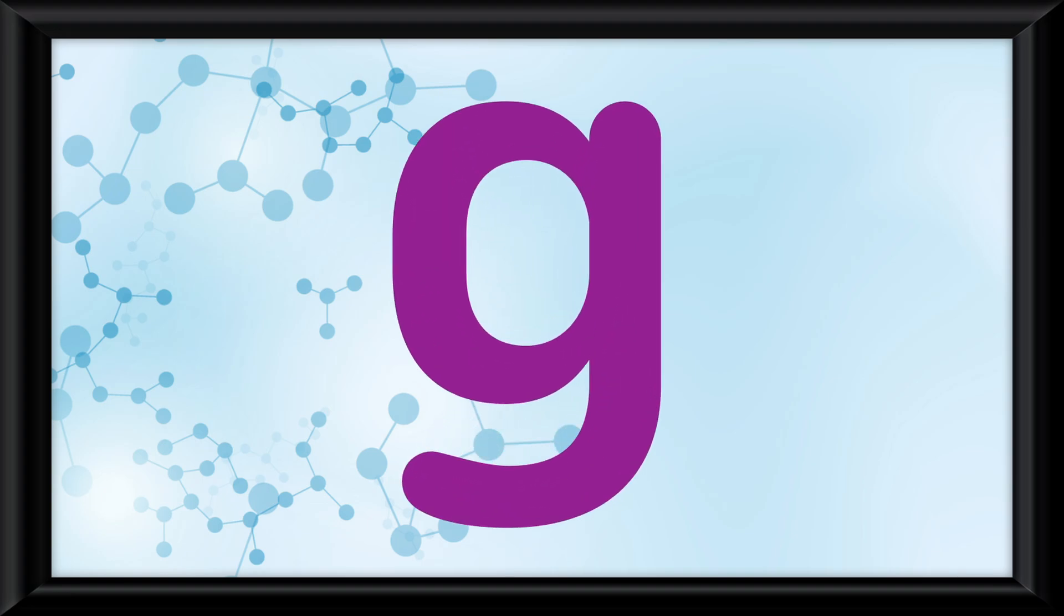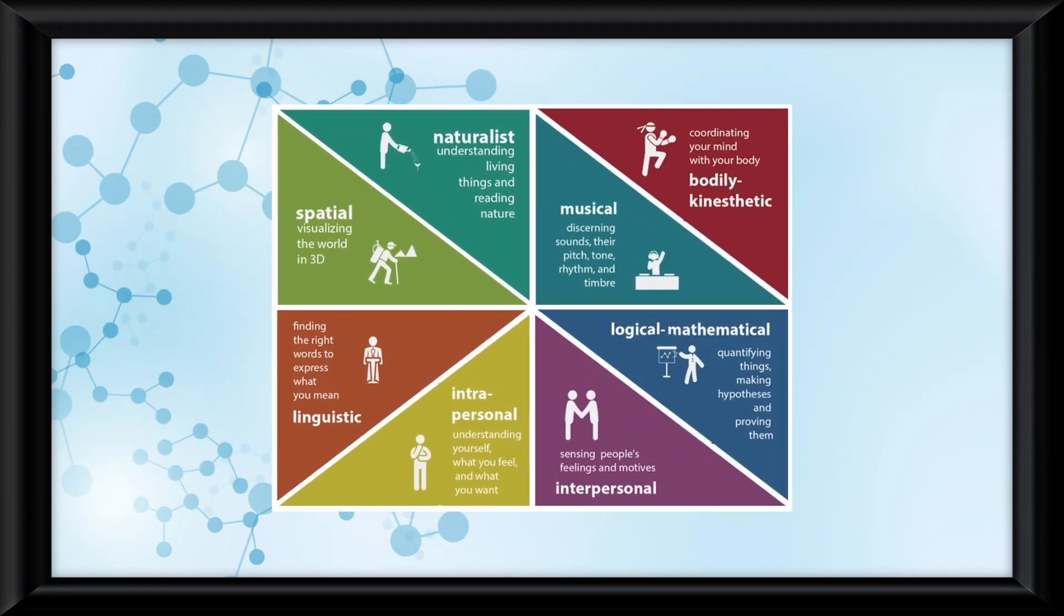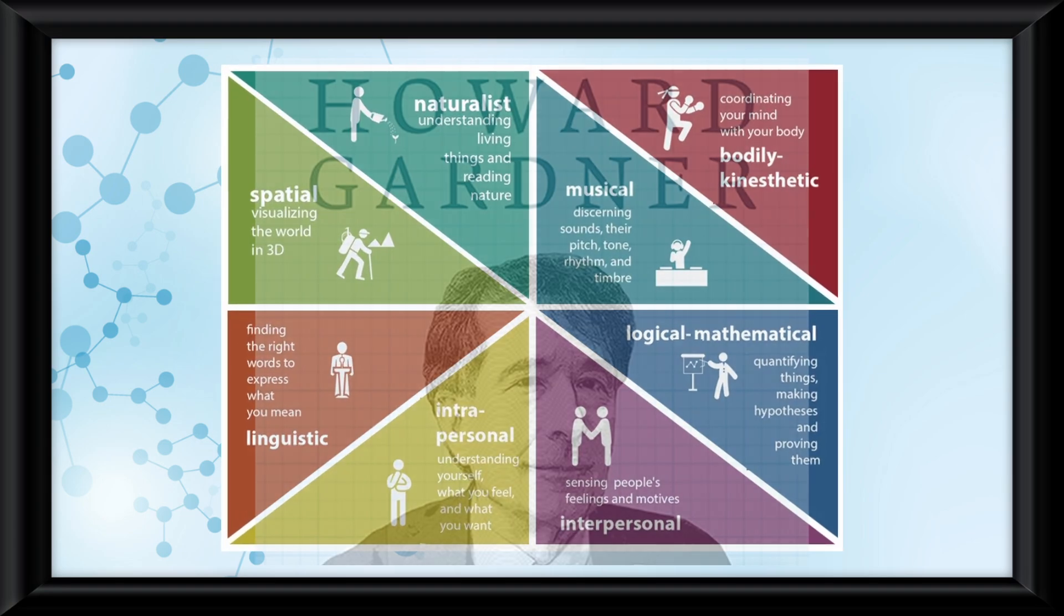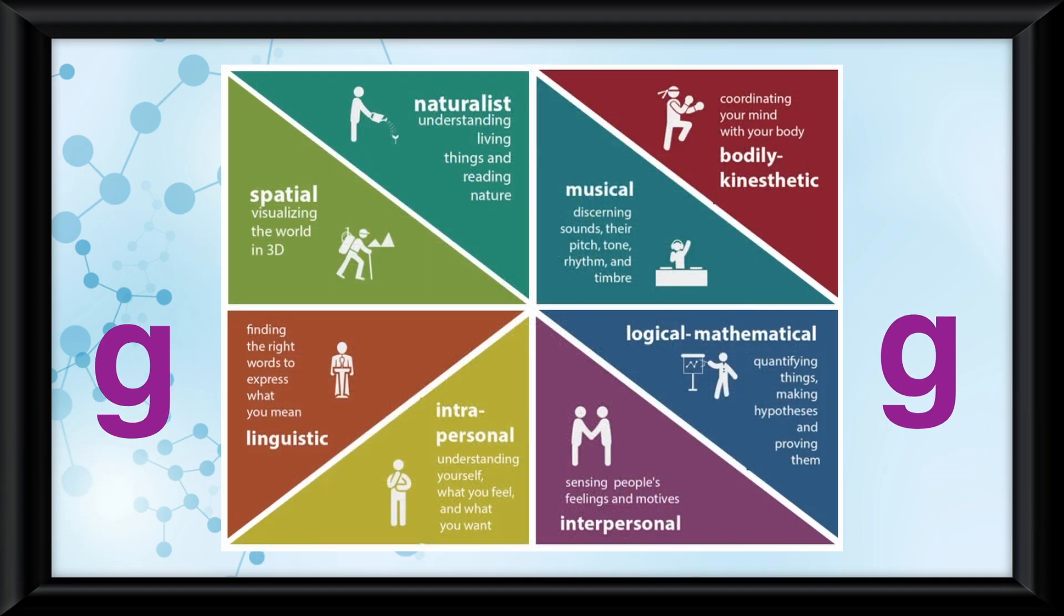One of the original measures of intelligence was one mental measure by Charles Spearman called G. Literally, just the letter G. But once intelligence was realized to be more than just a single factor, thank you Howard Gardner, the whole G thing was mostly shoved aside.